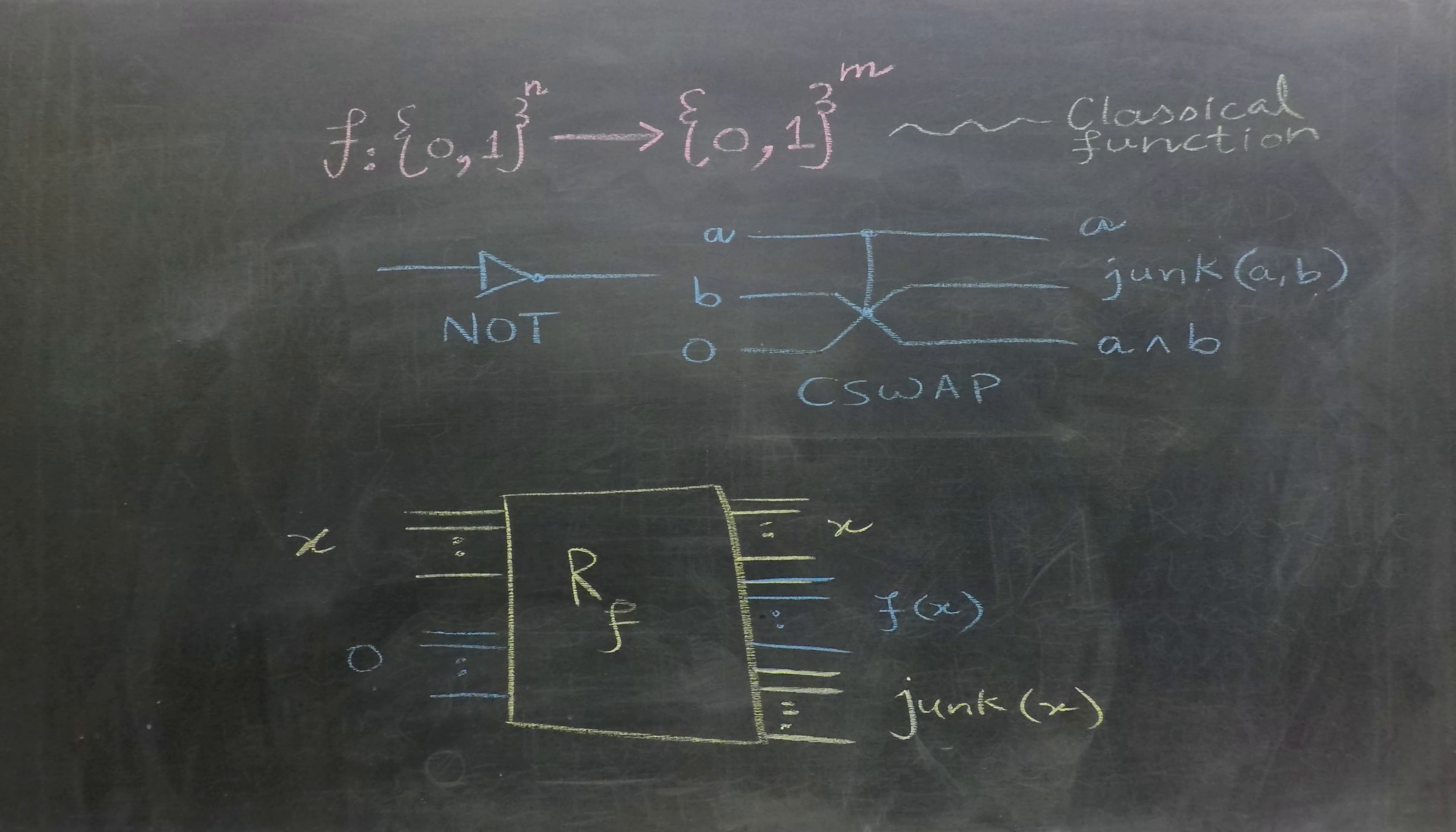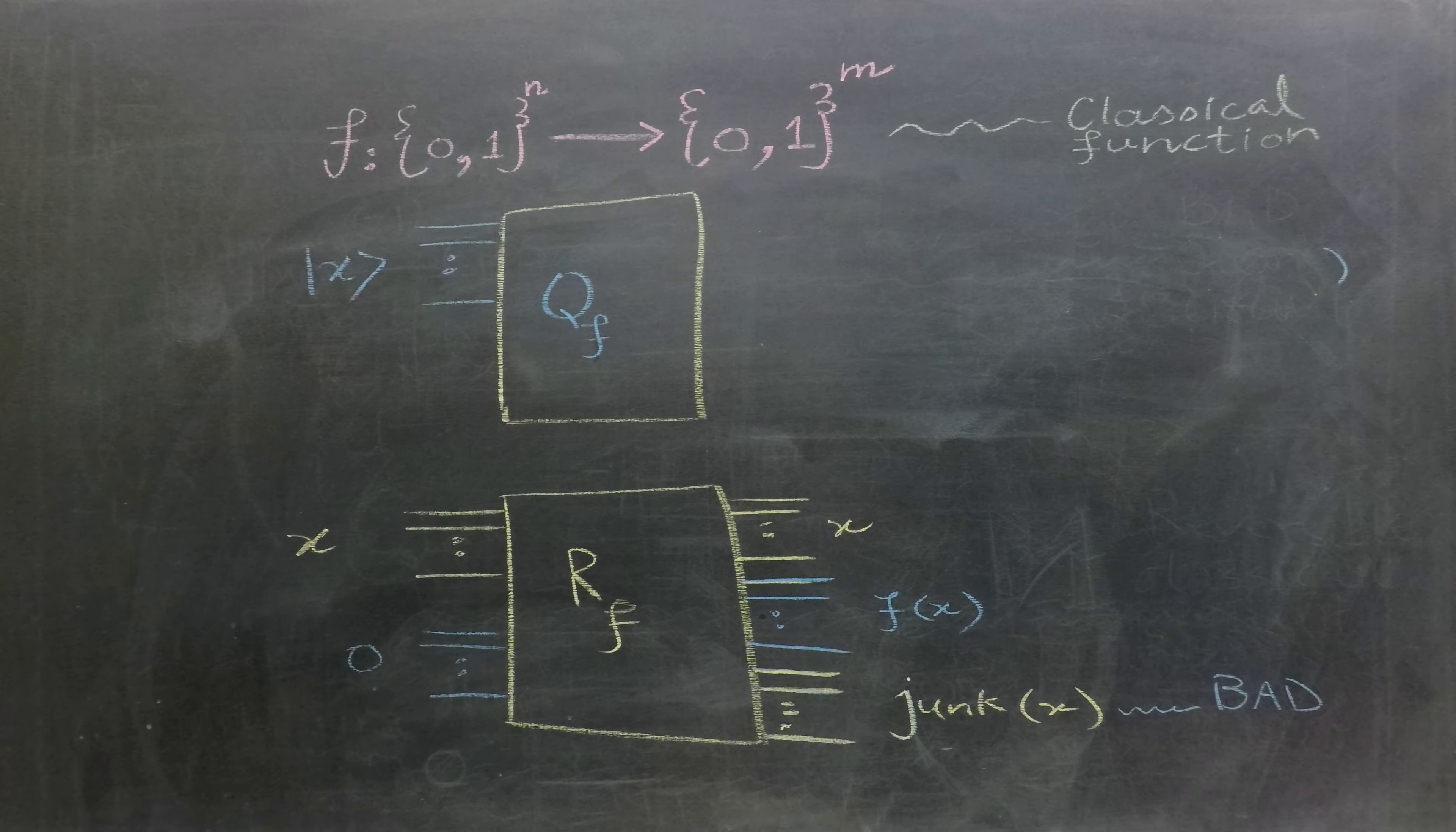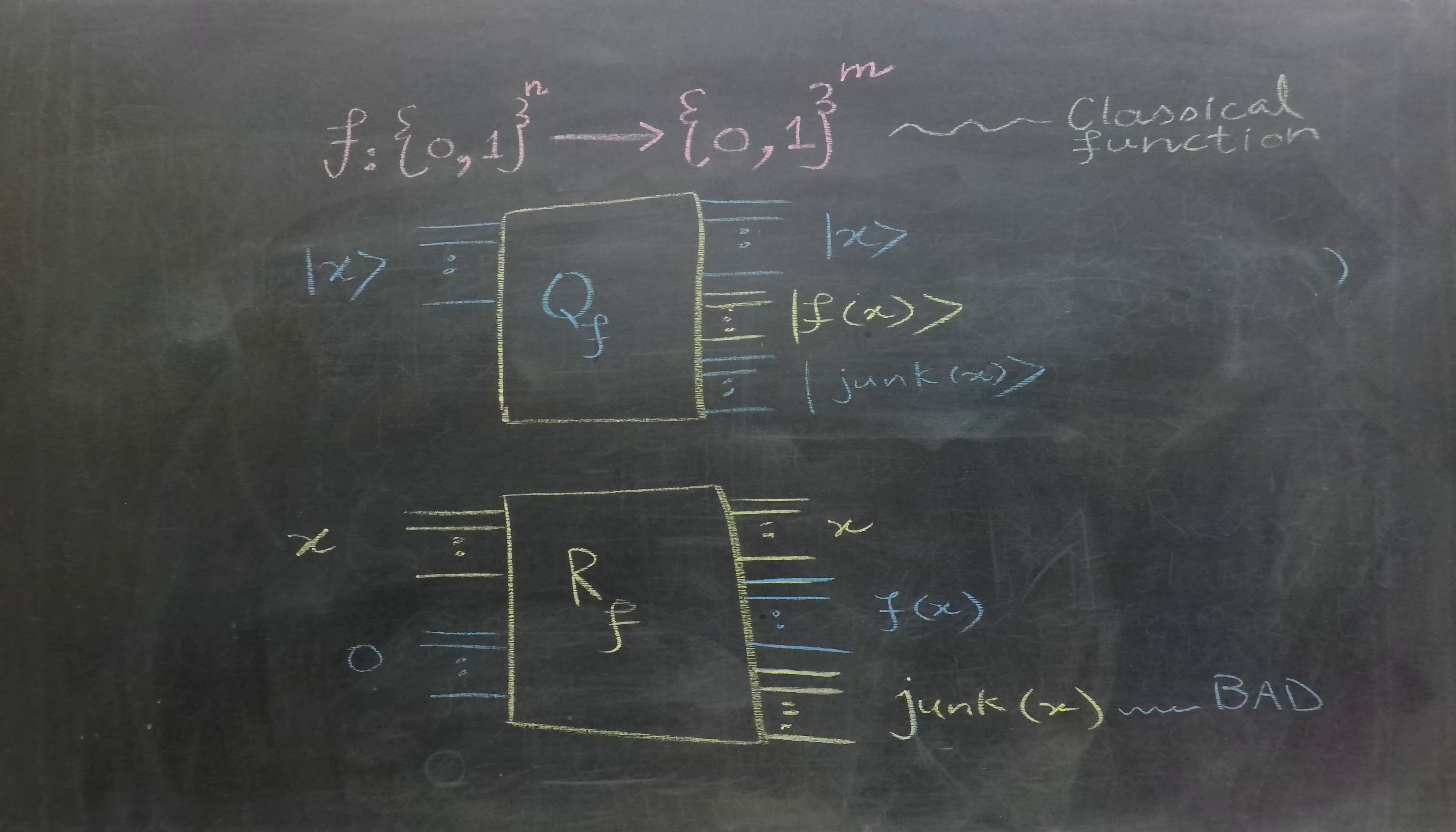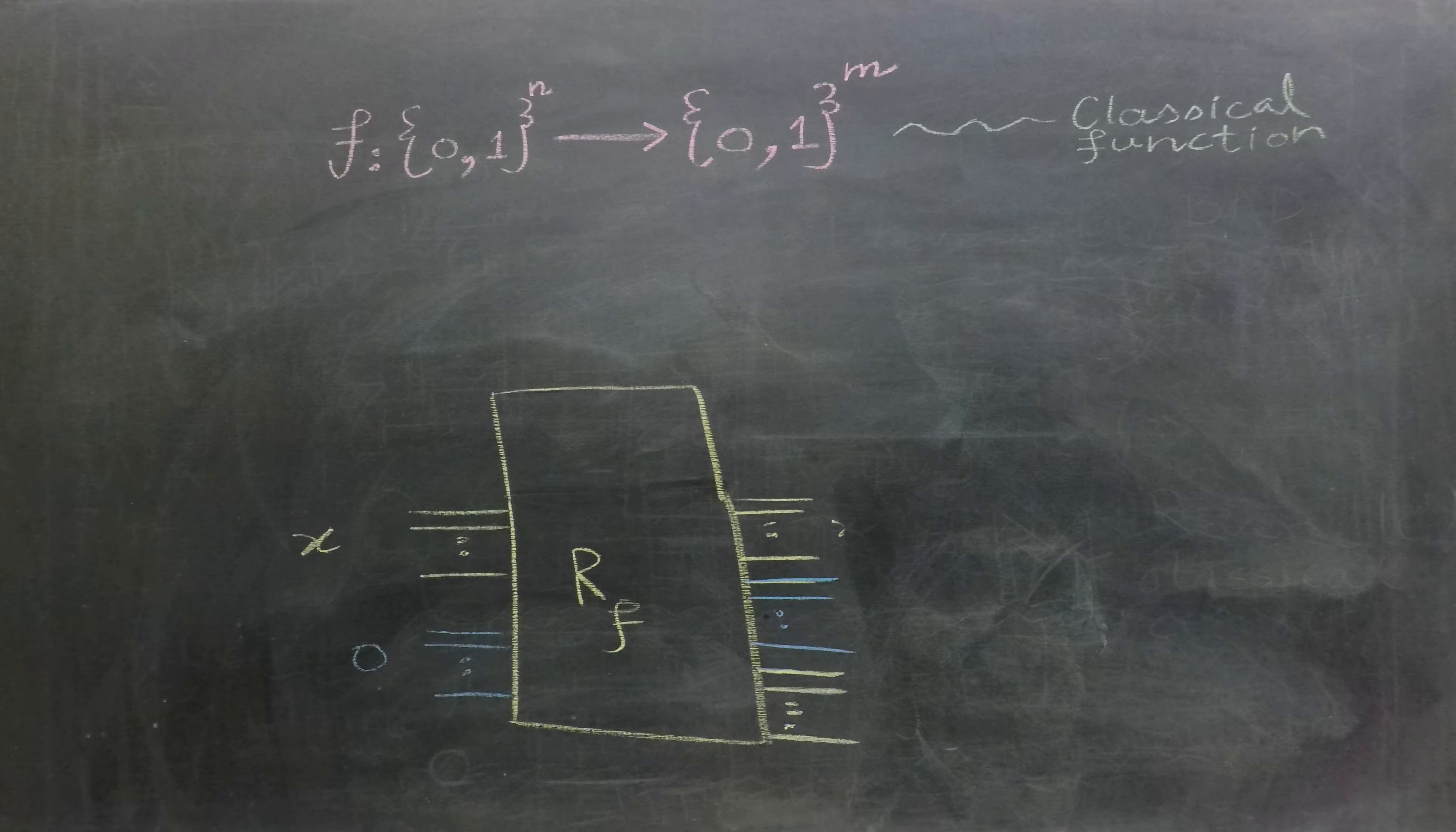This junk can be problematic. If we convert a classical reversible circuit with this junk into a quantum circuit, let's call it qf, the junk could become entangled with the output causing either positive or negative interference. This unintended entanglement and the resulting interference can lead to incorrect output and measurement results for the circuit. Therefore, we must modify our classical reversible circuit to eliminate this junk to ensure the quantum circuit functions correctly.